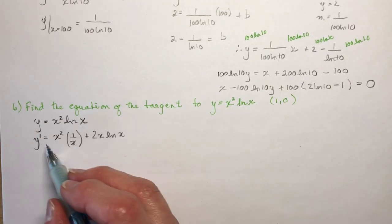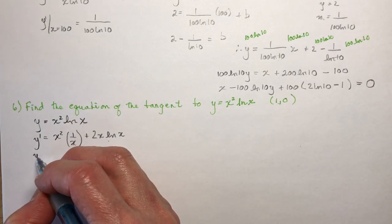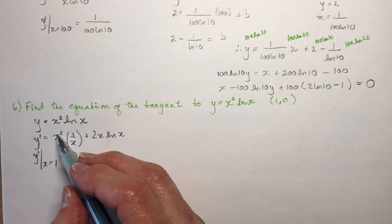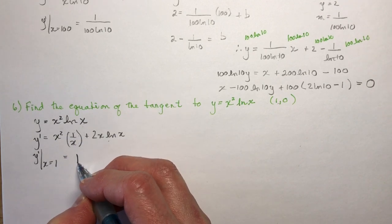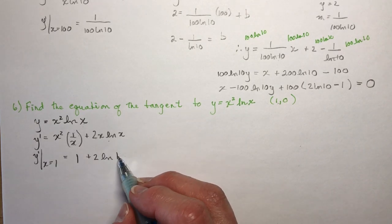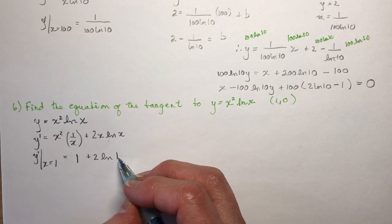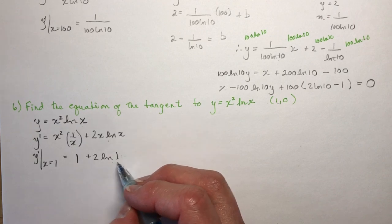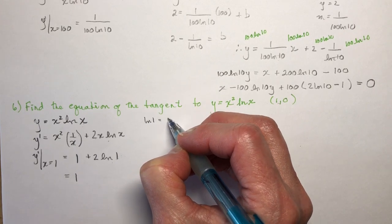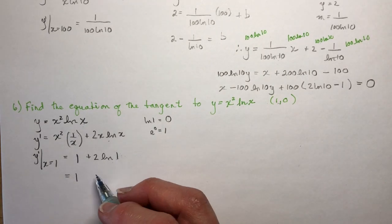I want the slope when x equals 1. Plugging in: x²/x is x, and when x is 1 that gives 1. Then 2 times 1 times ln 1. Since ln 1 equals 0 (because e to the 0 equals 1), that whole term is 0. So the slope is 1.